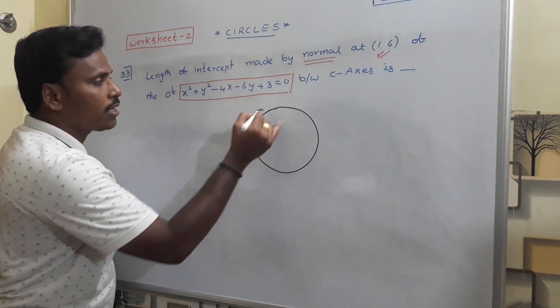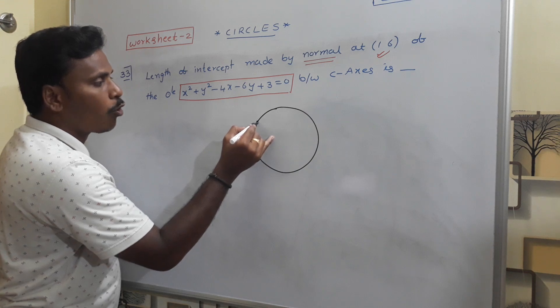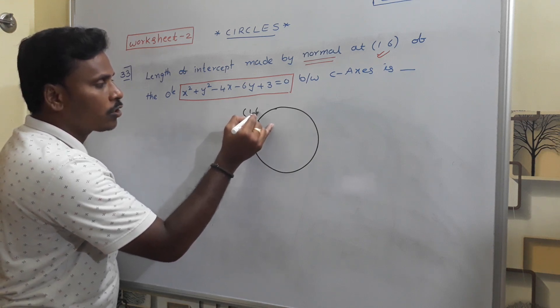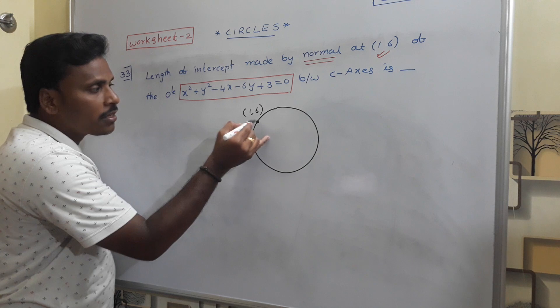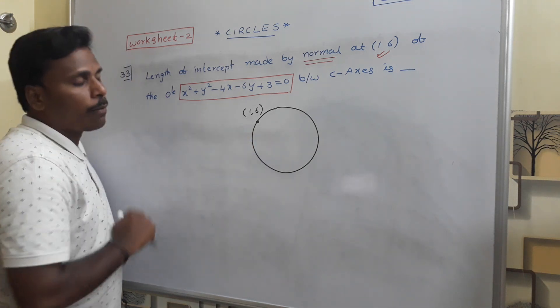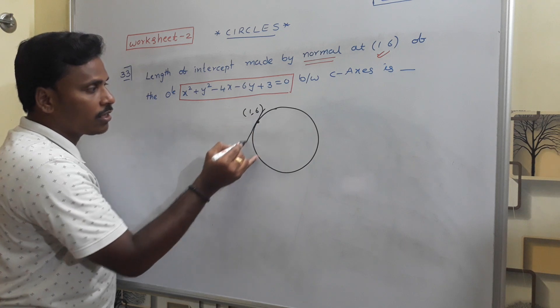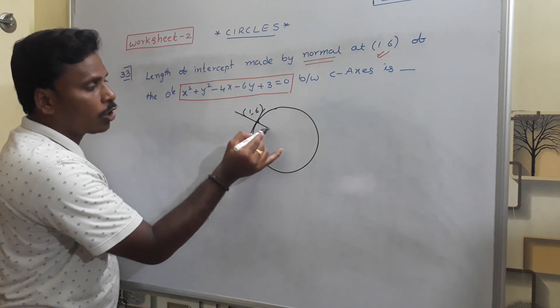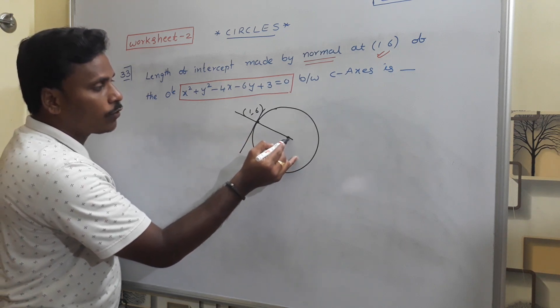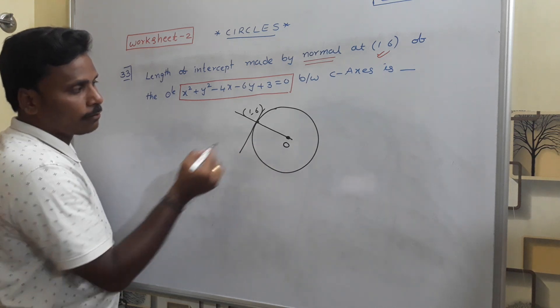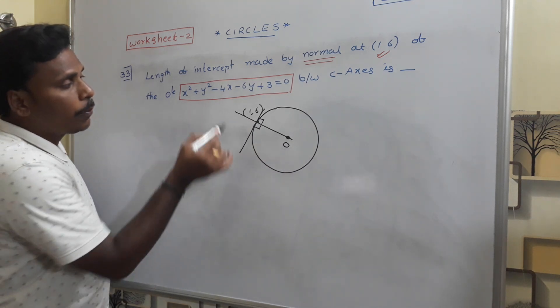Suppose if this is the circle, somewhere we have the point (1,6). If (1,6) is a point, we will find the normal equation. At this (1,6), the tangent and perpendicular to the tangent is the normal, and as we know, normal passes through the center.